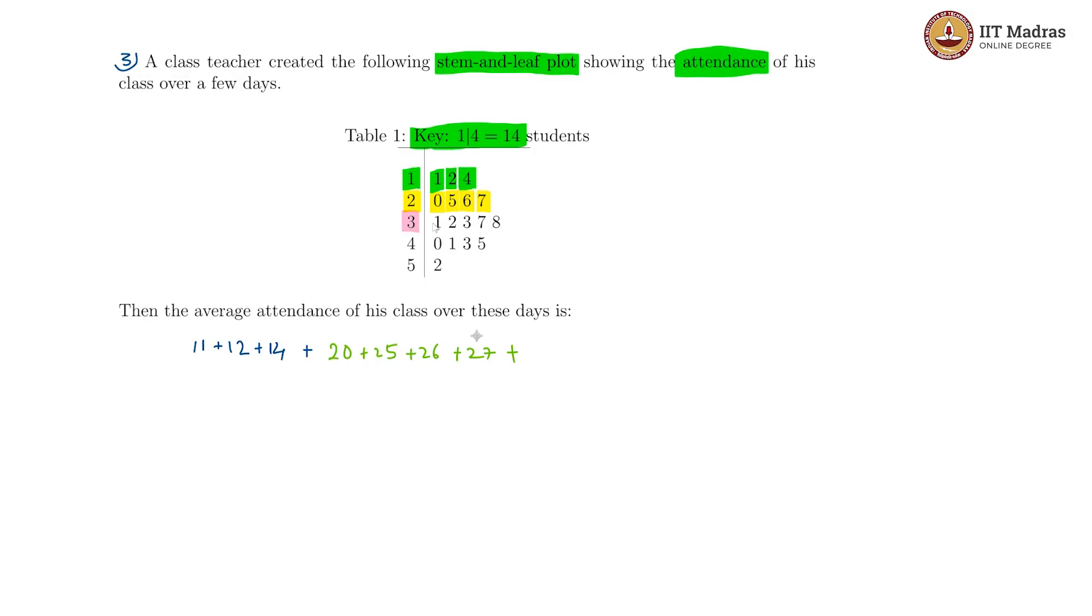For the 30s we have 31, 32, 33, 37, and 38. So we have plus 31 plus 32 plus 33 plus 37 plus 38.